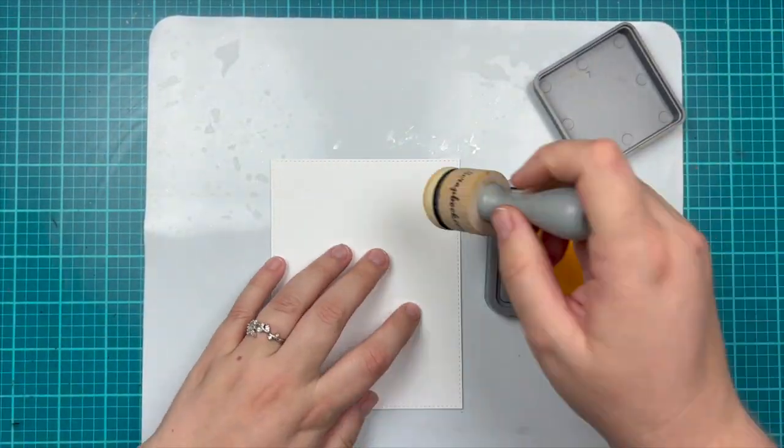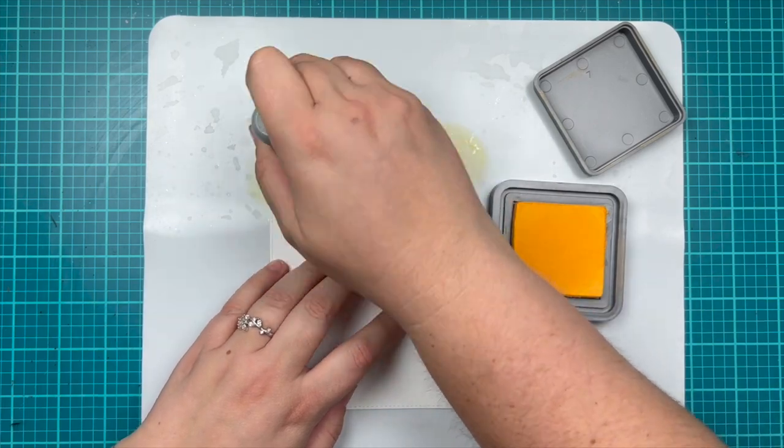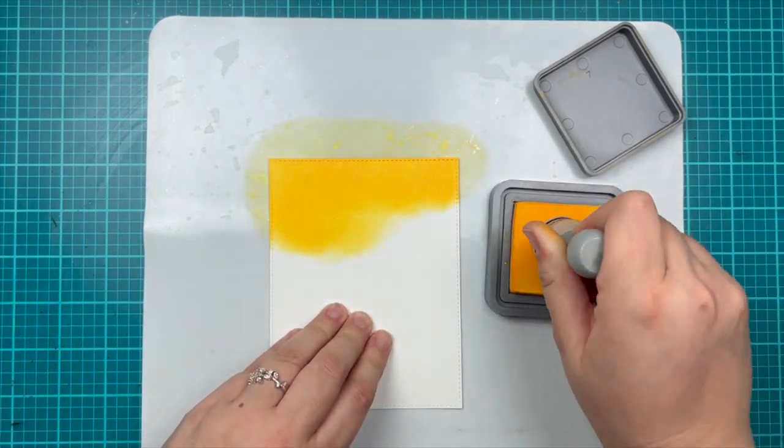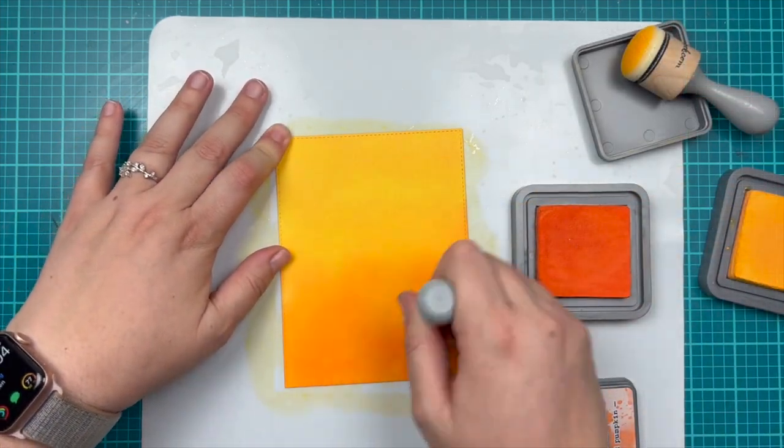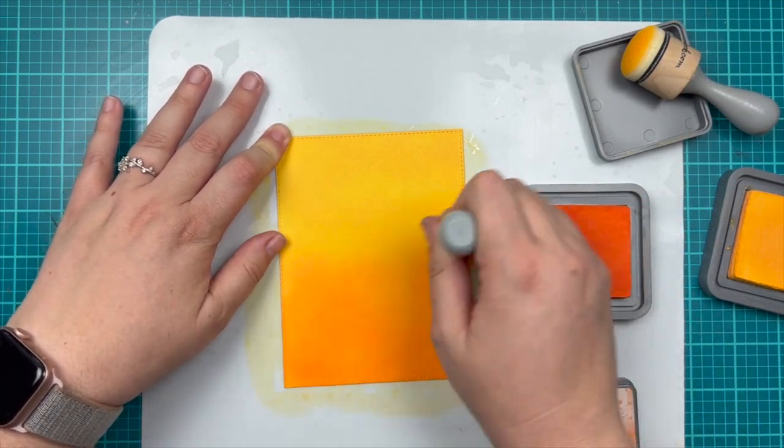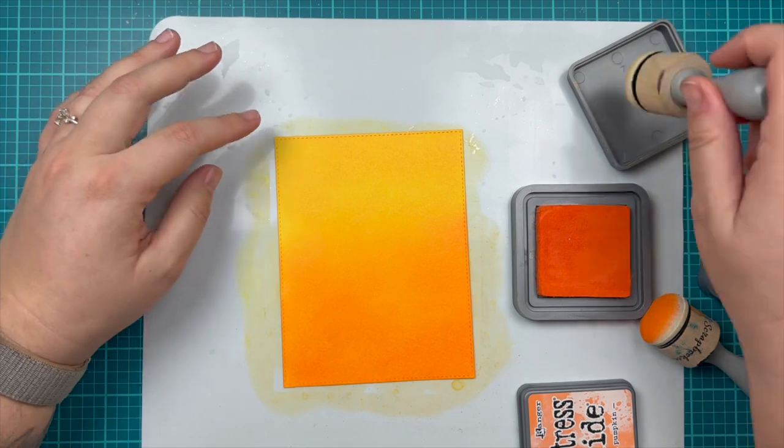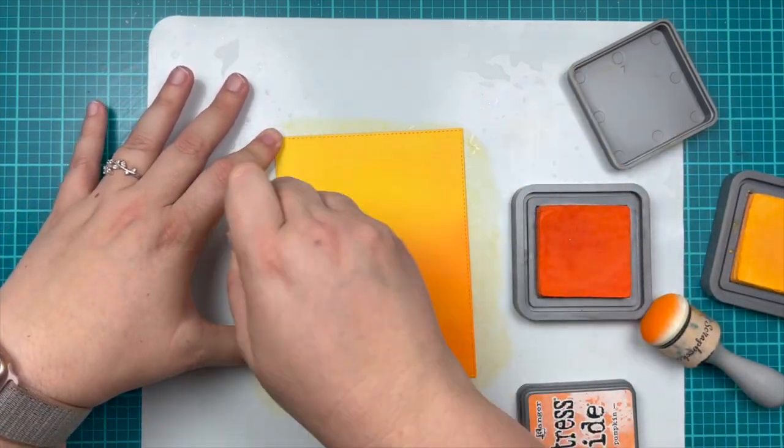First I'm starting with wild honey and I'm going to blend that onto the top two thirds of my card. Then I'm going to grab that carved pumpkin and fill up the bottom third, then go about halfway up to blend those two colors together.